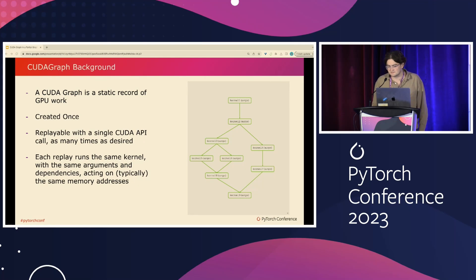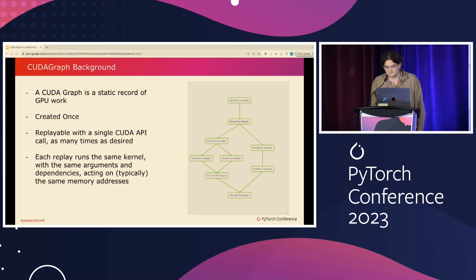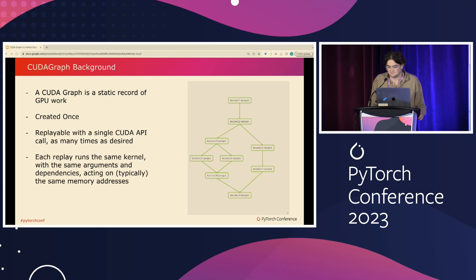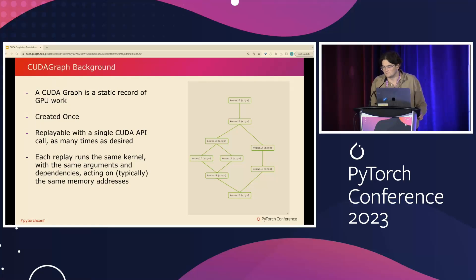A CudaGraph is a static record of GPU work. Kernels, kernel arguments, kernel execution dependencies are fixed. Then you replay a captured CudaGraph to run all of the kernels with those same arguments and dependencies, which also typically means on the same memory addresses. Only Cuda memory changes during graph replay.